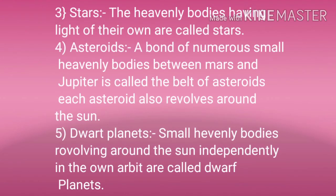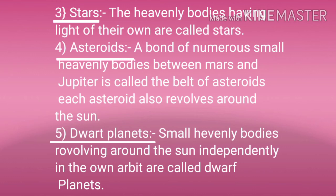Third, stars: Heavenly bodies having light of their own are called stars. Fourth, asteroids: A band of numerous small heavenly bodies between Mars and Jupiter is called the belt of asteroids; each asteroid also revolves around the sun. Fifth, dwarf planets: Small heavenly bodies revolving around the sun independently in their own orbit are called dwarf planets.